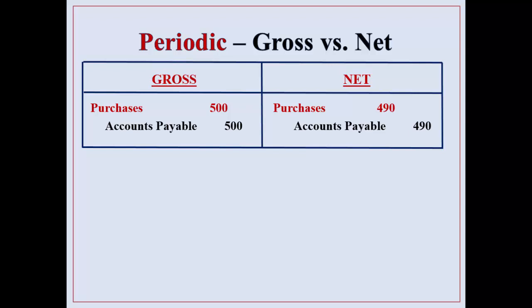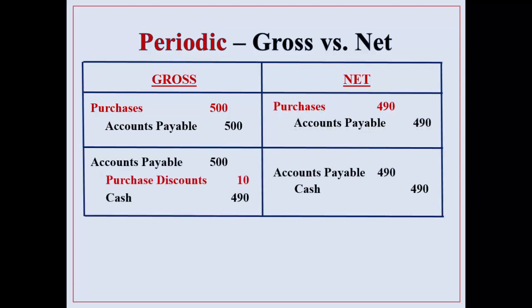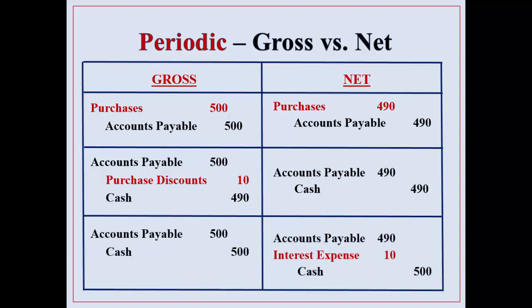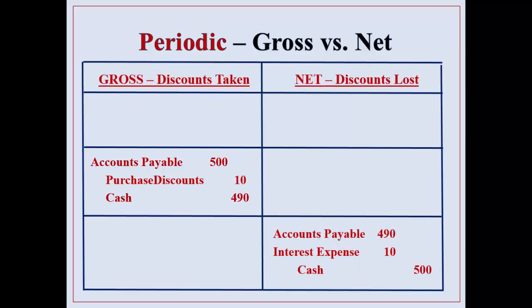For the periodic system, it's going to be purchases instead of the inventory account. Purchase discounts is used under the gross method. Purchase discounts isn't even used if you're using the net method, even with the periodic system. If you're not paying within the discount period it's classified as interest expense, so that cost is not going into your inventory and it's not ending up in cost of goods sold — it ends up elsewhere on your income statement. So the focus is: if you're using the gross method you want to track discounts taken. If you choose to use the net method then you're focusing on tracking discounts lost.